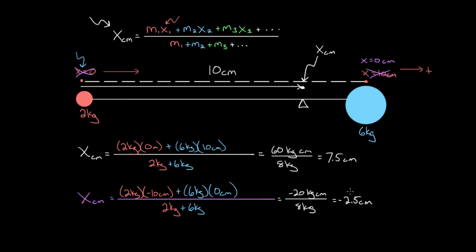So you might be worried. You might be like, what? We got a different answer. The location can't change based on where we're measuring from and it didn't change. It's still in the exact same position, because now this negative 2.5 centimeters is measured relative to this x equals zero. So what's negative 2.5 centimeters from here?